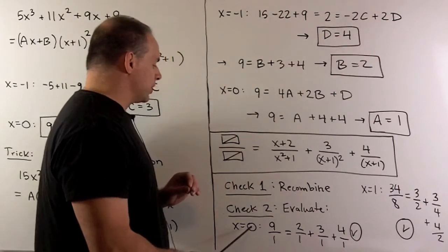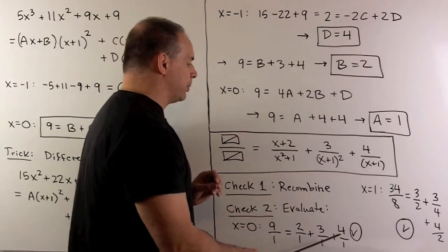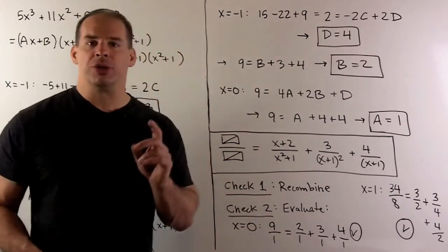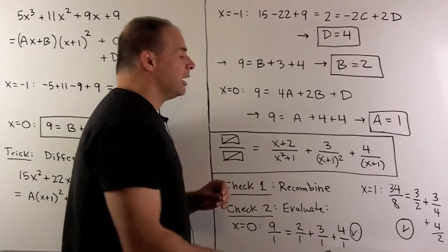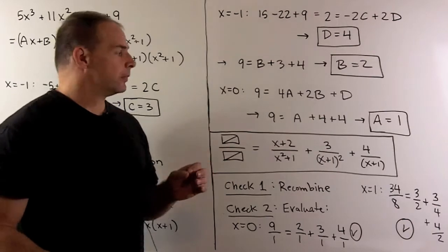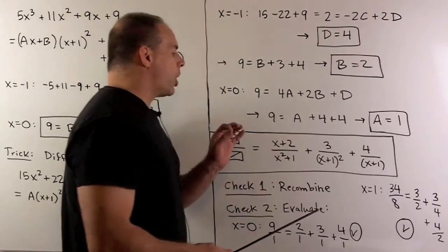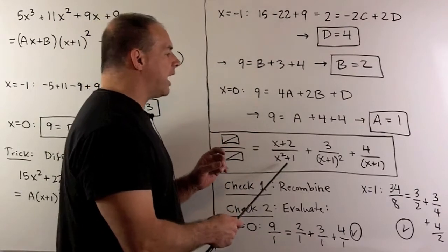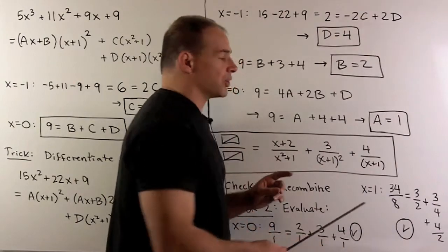For instance, if I take x equal to 0, for the partial fraction expansion, we get 2 plus 3 plus 4. In the original function, I get a 9, so that checks out. If I try x equal to 1, in the original function, we get 34 over 8. In our partial fraction expansion, we get 3 halves plus 3 fourths plus 4 over 2. That checks out also.